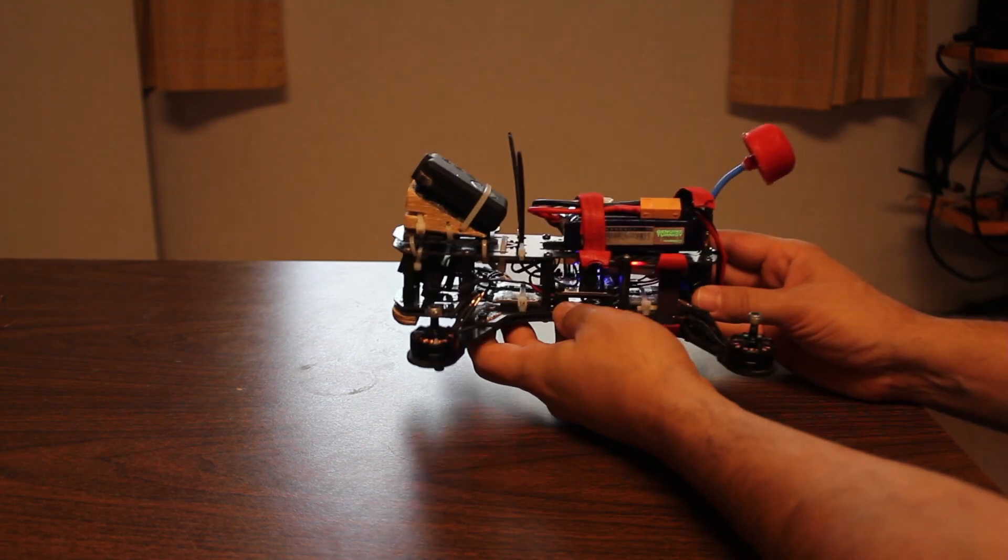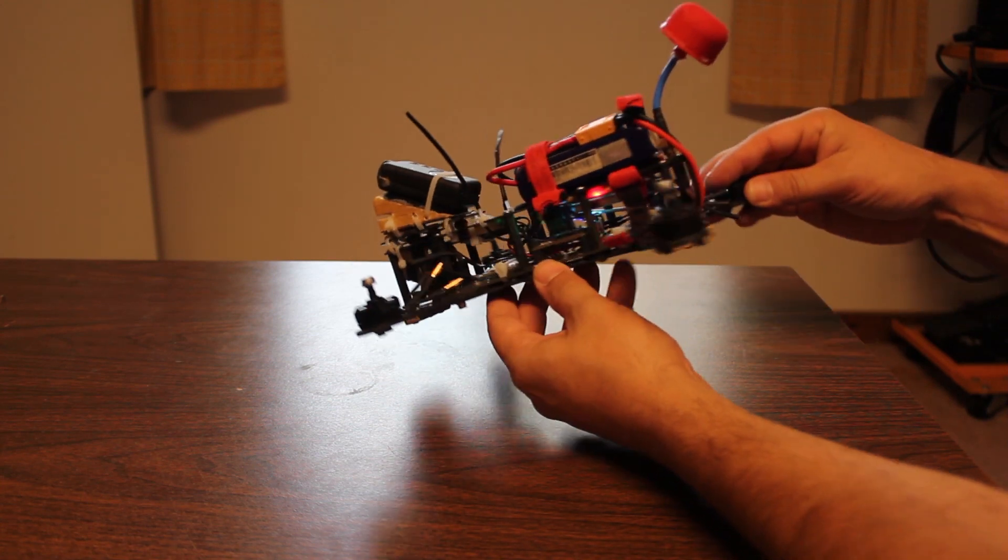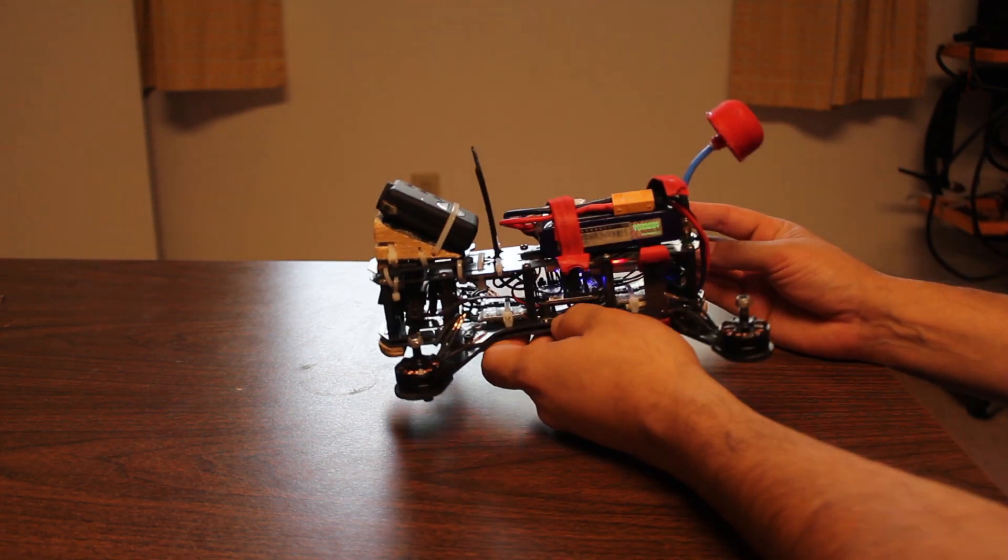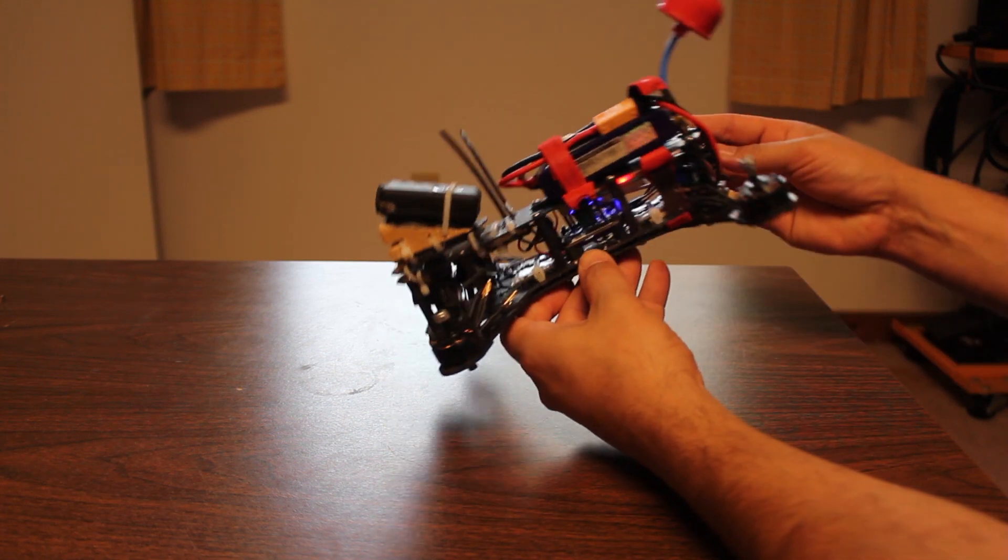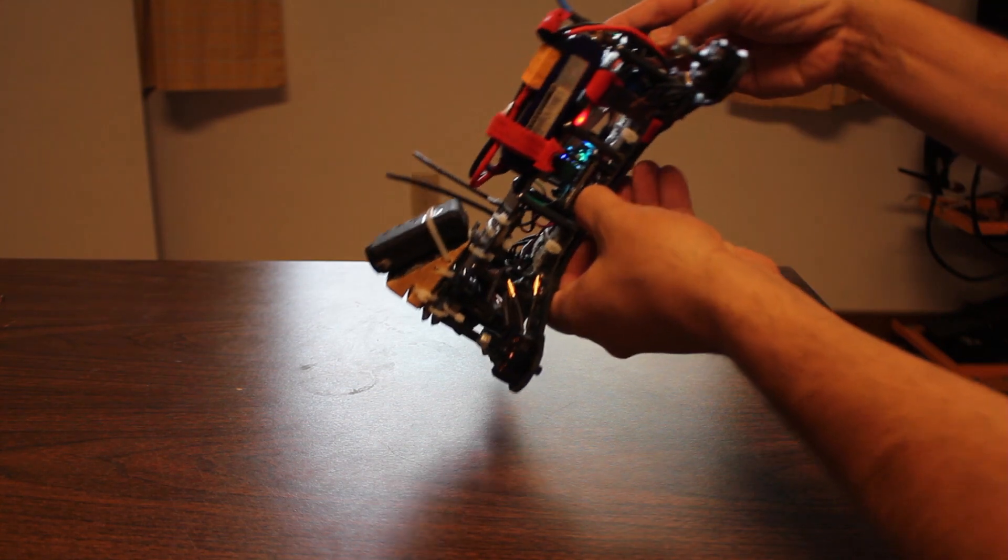What I'm getting at is that the actual amount of yaw and roll that you'll need to create a coordinated turn is going to vary depending on how fast you're flying and how much up tilt your camera has, basically how pitched forward you are at the moment.